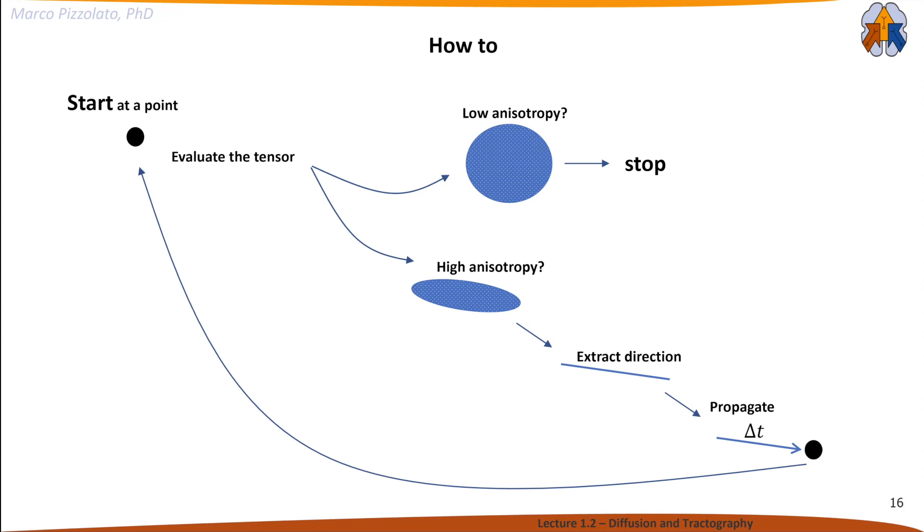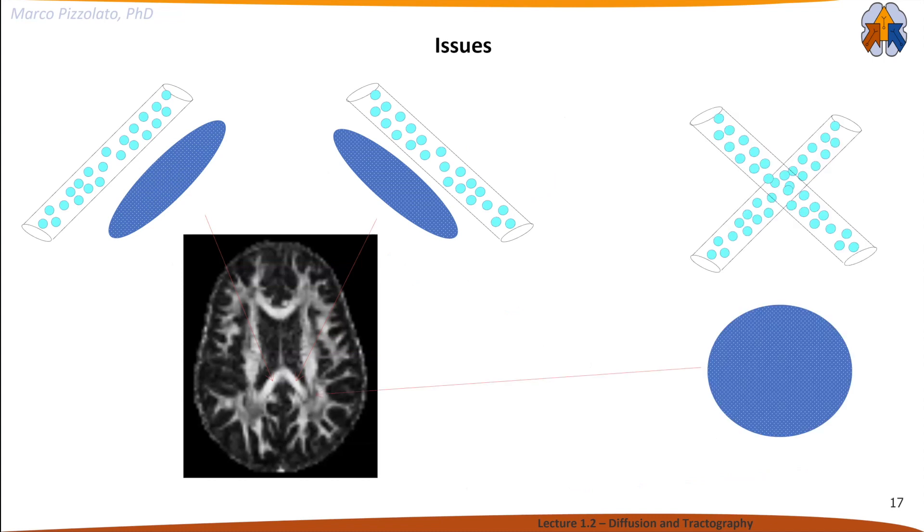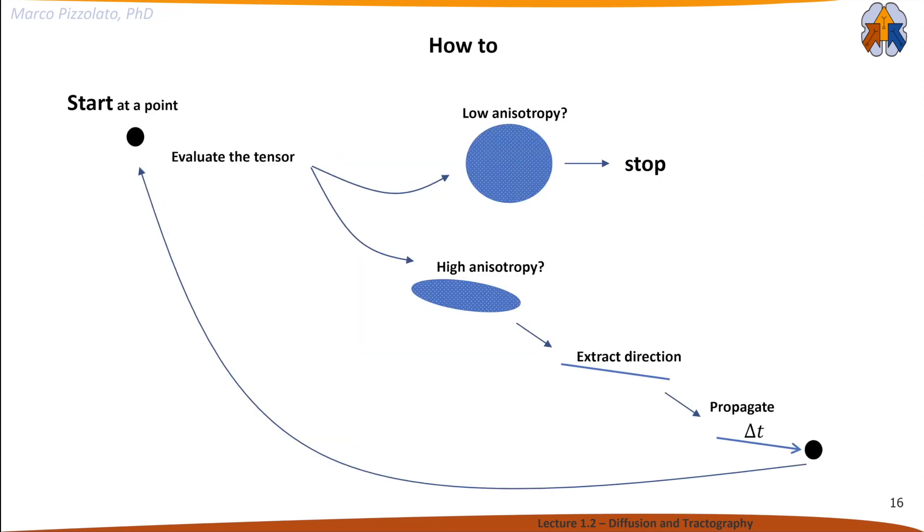Probabilistic tractography is similar in principle. However, when we stick to tensor representation, we have issues. Here we see two bright spots in the fractional anisotropy image—so far so good. But there are regions where multiple axonal populations cross each other, and the diffusion tensor representation is too simplistic. We get a completely isotropic tensor, so our tractography algorithm stops propagation.